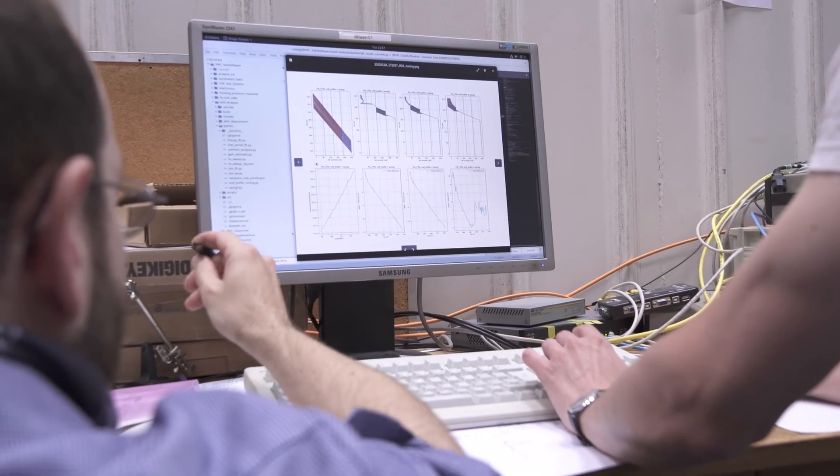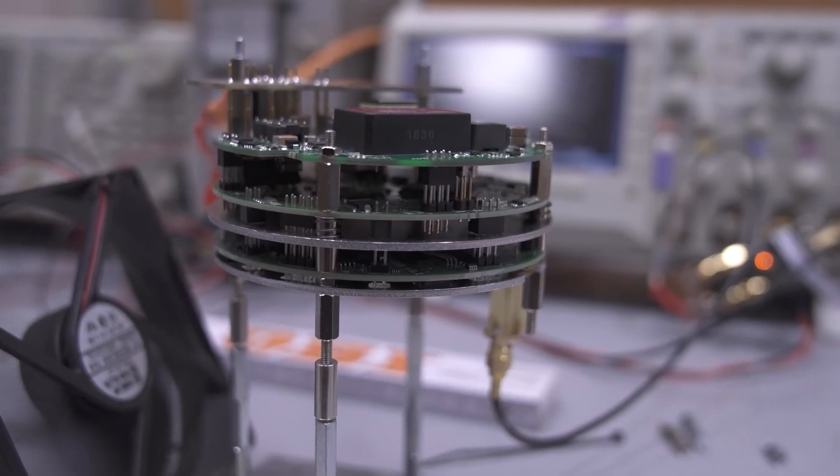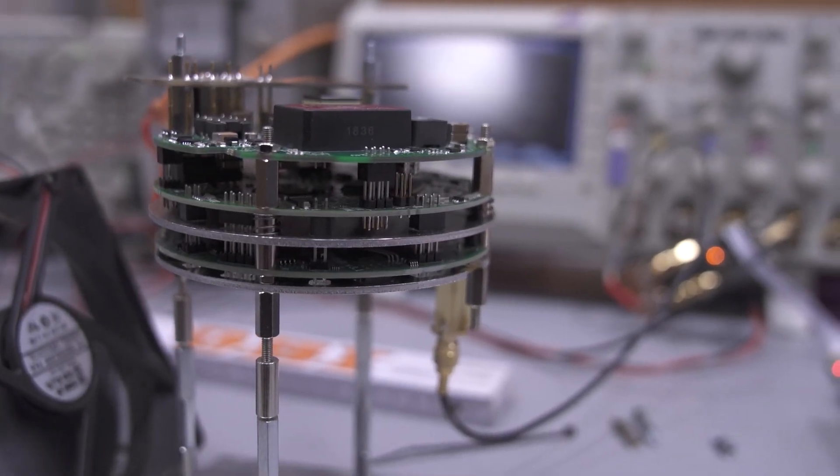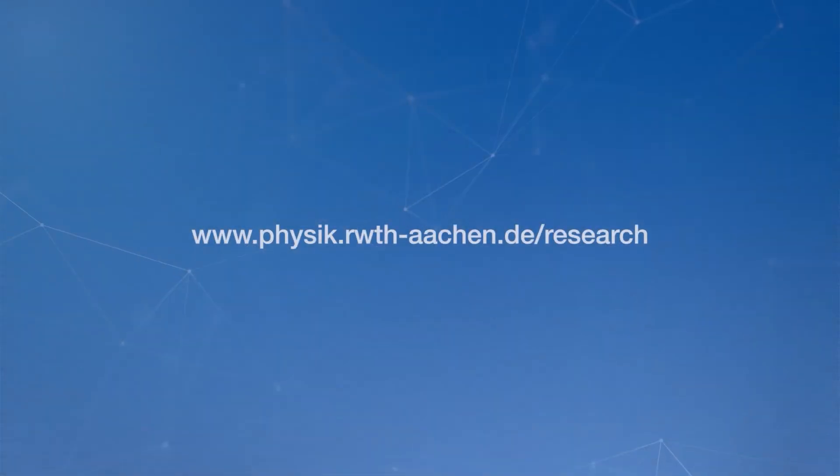In this working group, you can participate in the development of intelligent photomultipliers, for example by developing new algorithms or improving the readout. Furthermore, it is also possible to analyze neutrino events within our analysis group.